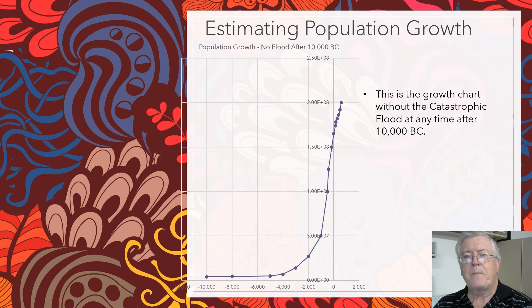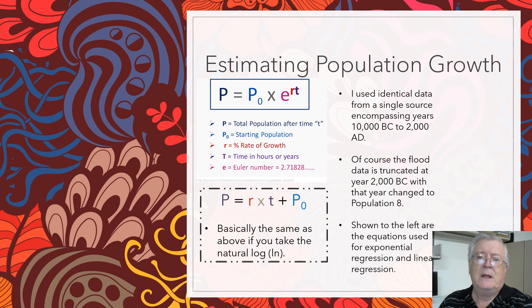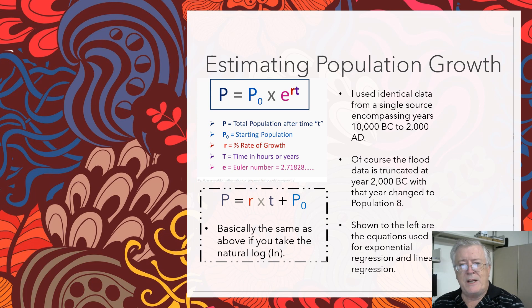So this is what the population growth looks like with no flood. Here I started at 10,000 BC, just for a starting point. You can see that it has the baseline and then it begins to climb like a usual population growth map or graph. Okay guys, here's the math. Don't get scared yet.